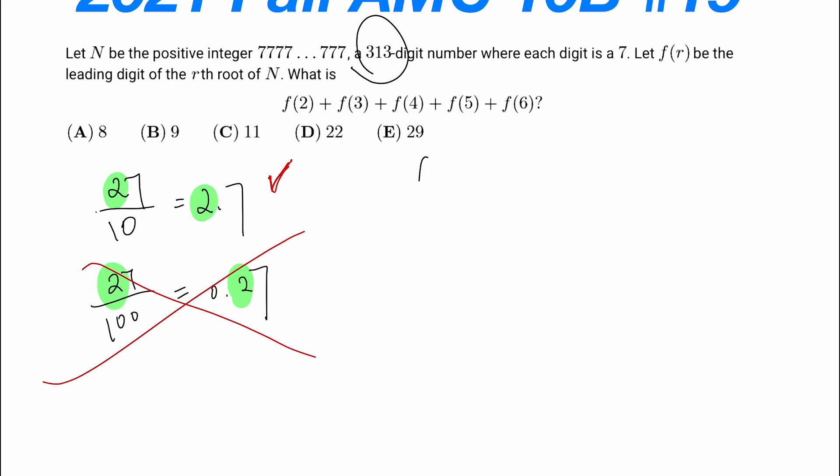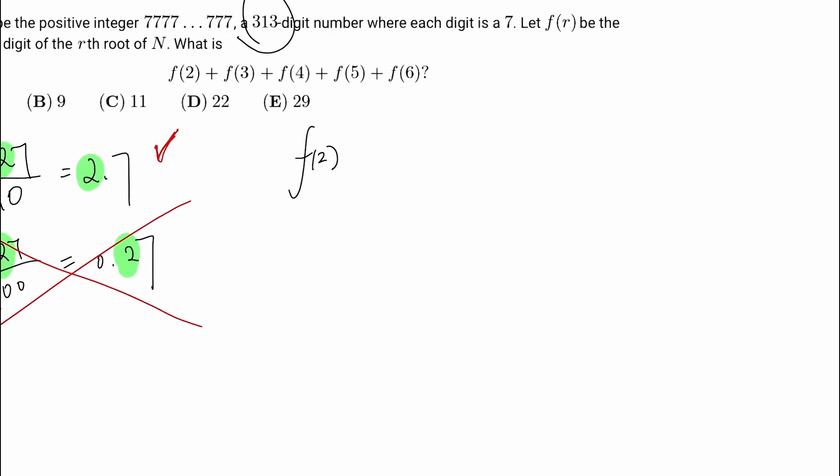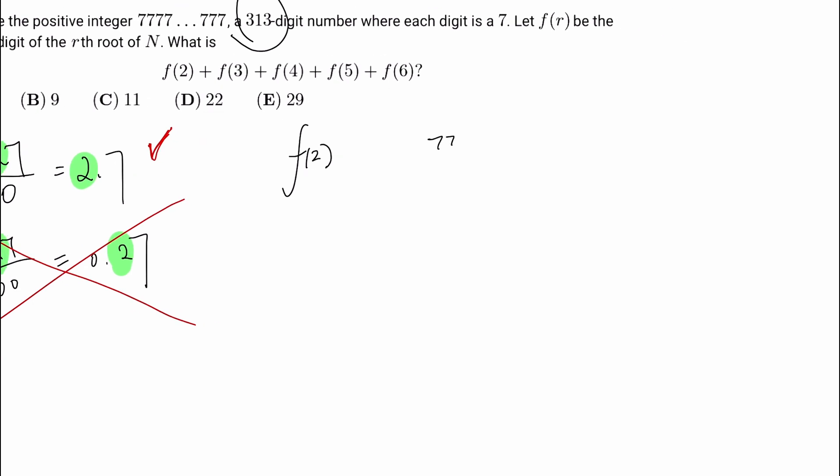Let's first consider f(2). We want to do the square root of 777...777. As I've said, we want to find the leading digit of this. So we can basically divide that by 10 and find the leading digit. However, it's still really hard to find the leading digit of that.